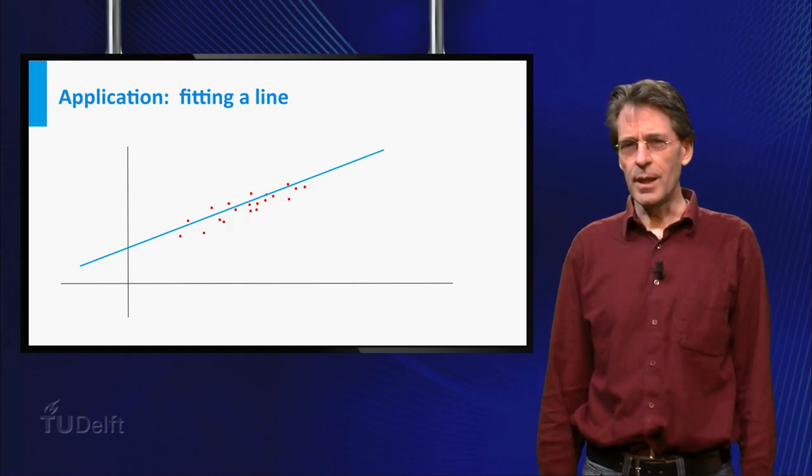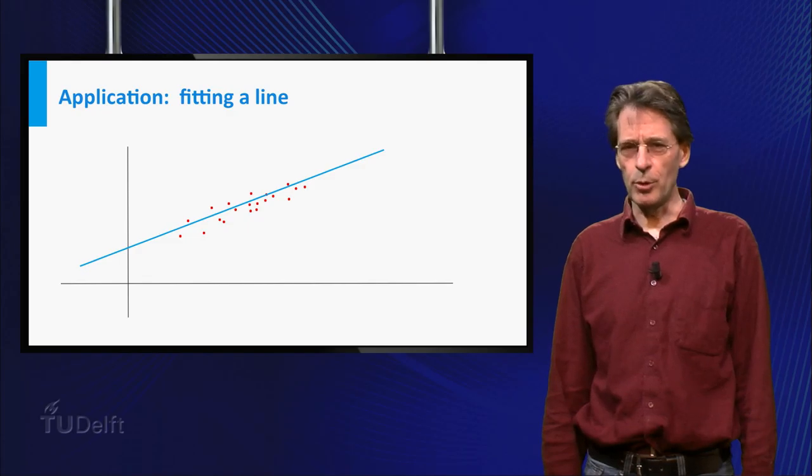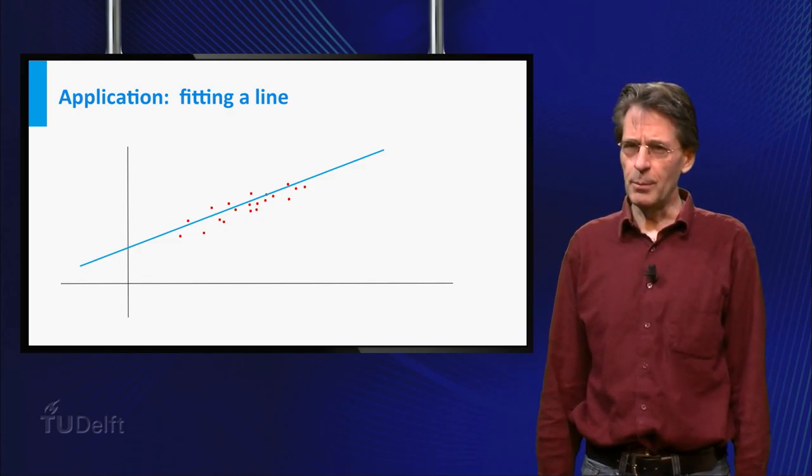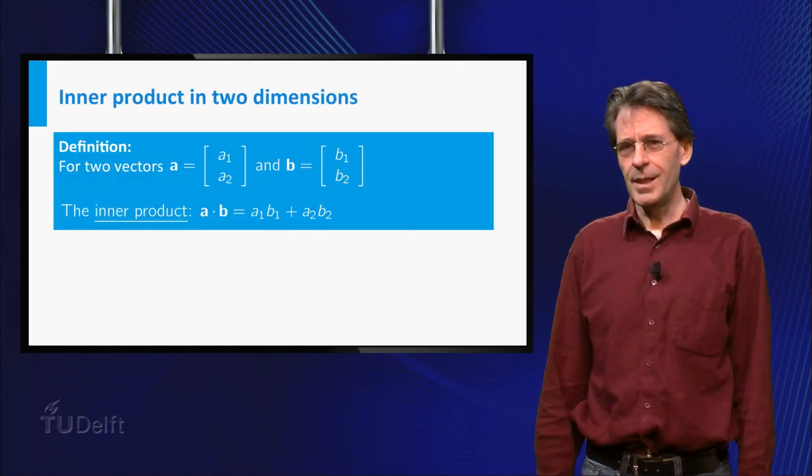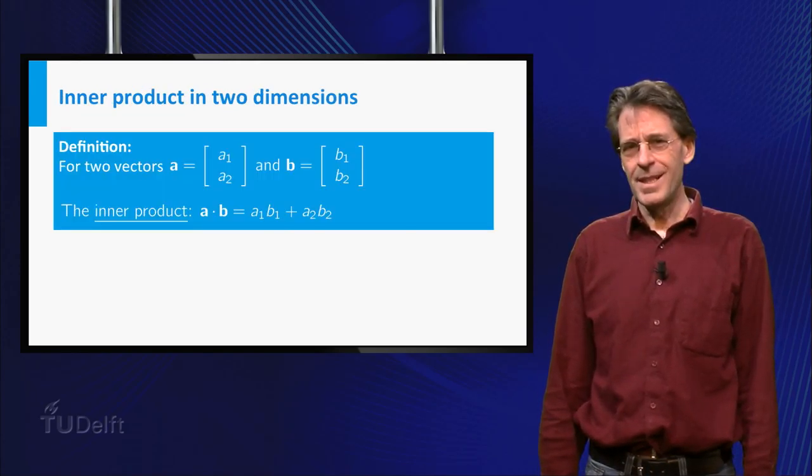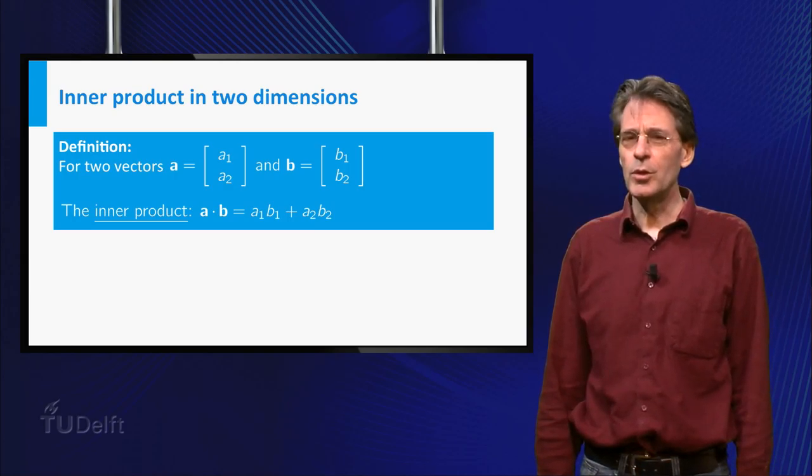As you have seen in calculus, the geometric concepts length, distance and angle can be expressed using the inner product. To keep it simple, let's look at vectors in the plane. The inner product of a and b is defined as a1 times b1 plus a2 times b2. It is also called the dot product.